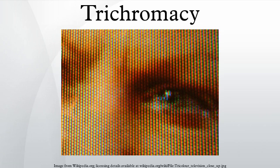Most other mammals are currently thought to be dichromats, with only two types of cone. Most studies of carnivores, as of other mammals, reveal dichromacy, examples including the domestic dog, the ferret, and the spotted hyena. Some species of insects are also trichromats, being sensitive to ultraviolet, blue, and green instead of blue, green, and red.